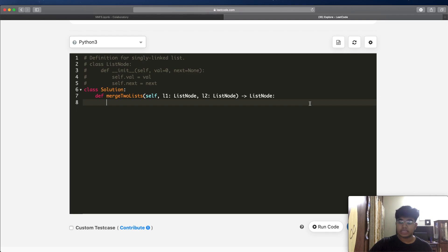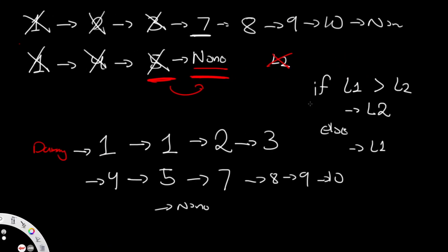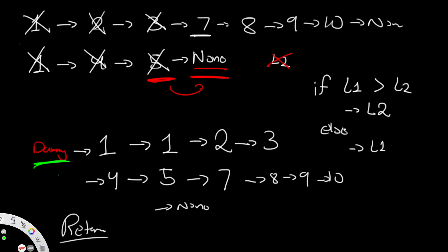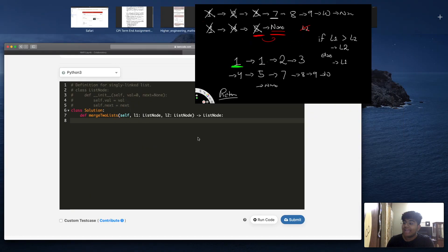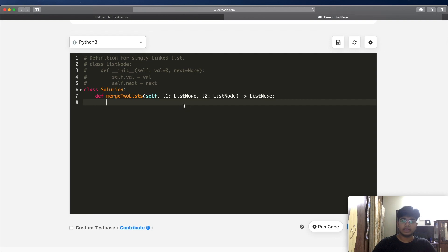Now let's code this out. First, let me explain why we need the dummy head. When we want to return our answer, we return the head value. If we returned dummy itself, that would be incorrect because dummy is not part of our linked list — it's just a placeholder. So we return dummy.next, which is the actual head of our merged linked list. That's the whole point of the dummy node.